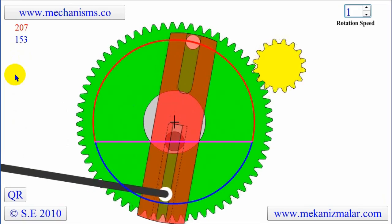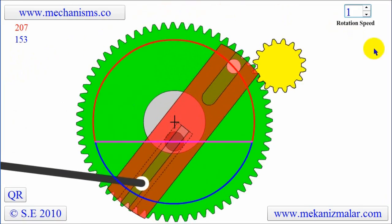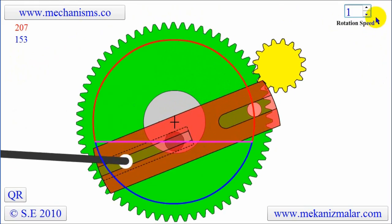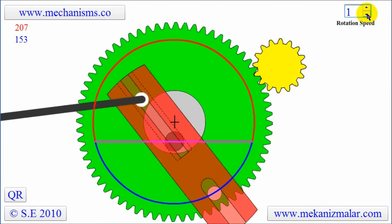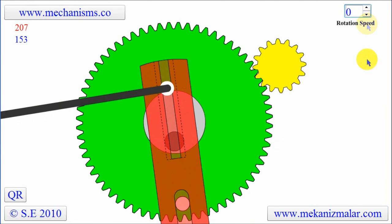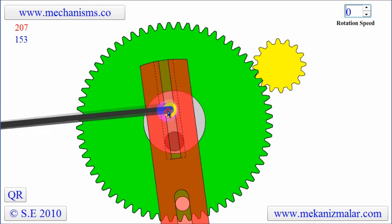Another important feature of the Whitworth mechanism is the ability to adjust the stroke size. We will do this by first stopping the rotation by bringing it to zero, and then adjusting the location of the upper white pin.